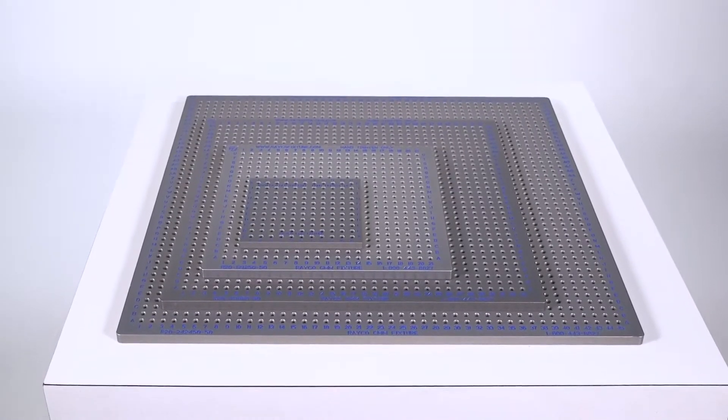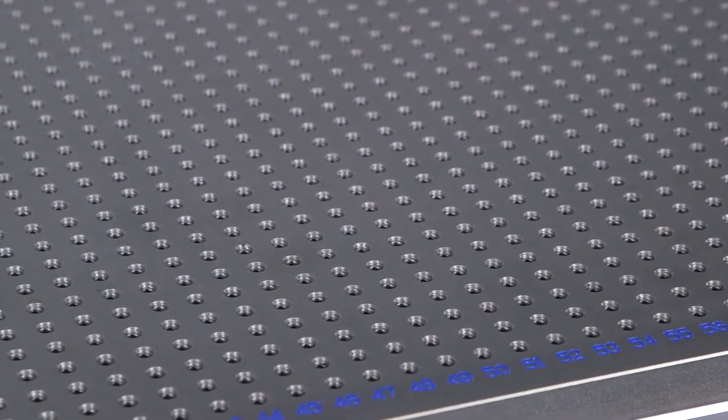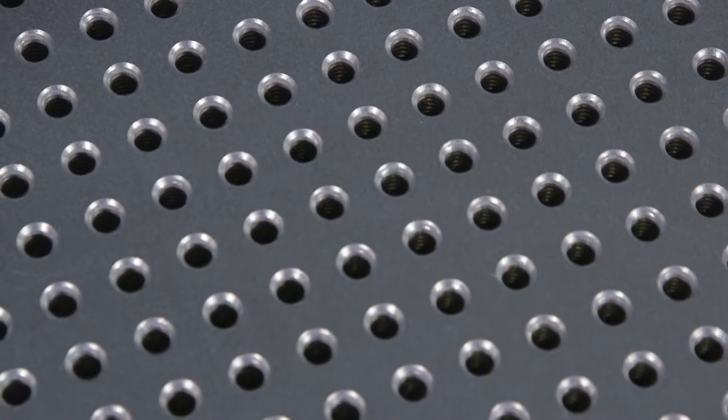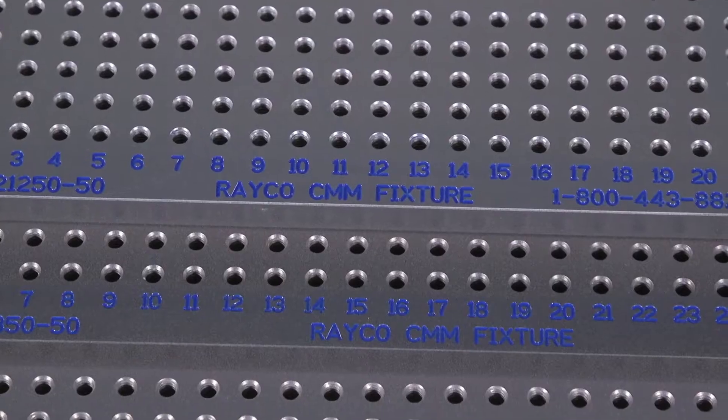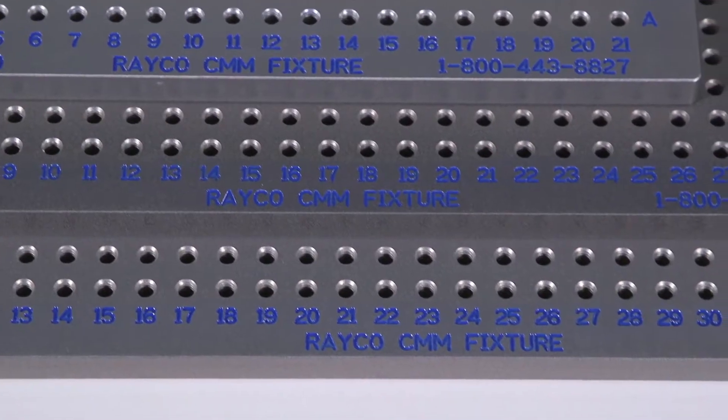Rayco CMM fixture plates are made from cast aluminum with threaded holes evenly spaced on center throughout the surface. Optional bolt patterns can be added at no additional cost.